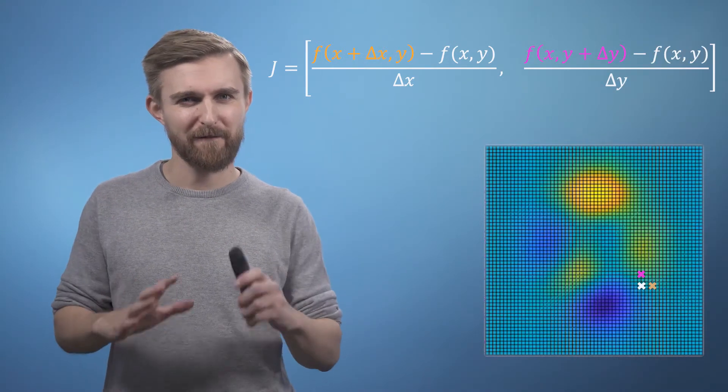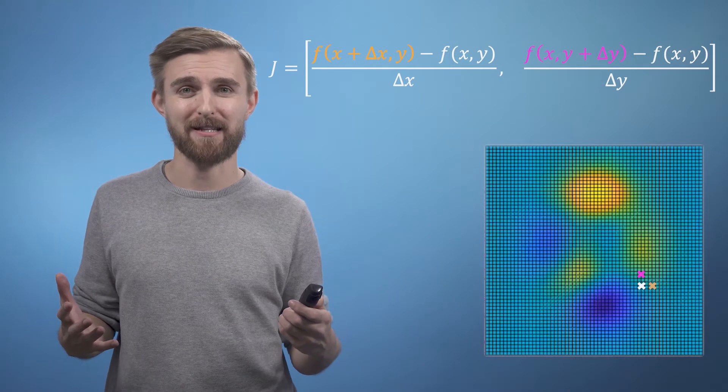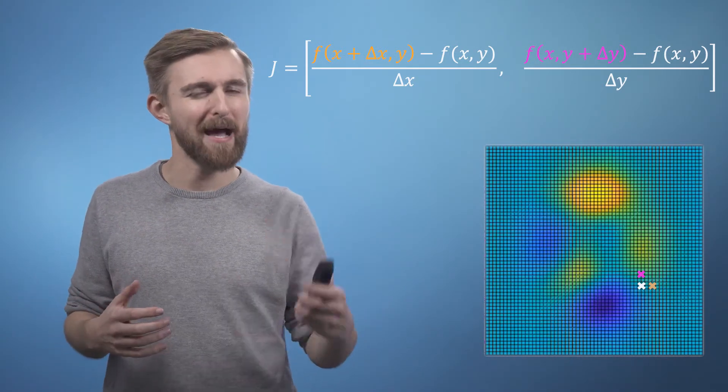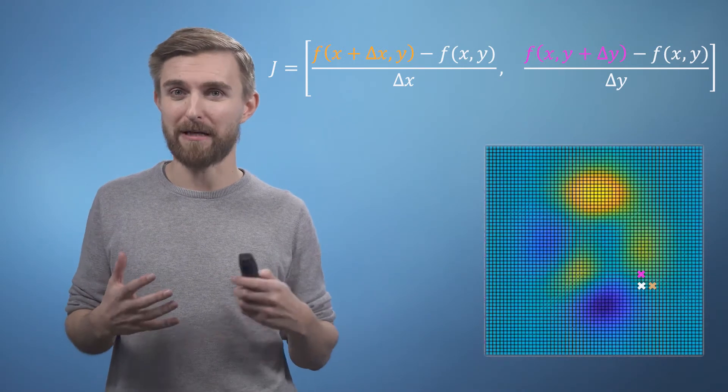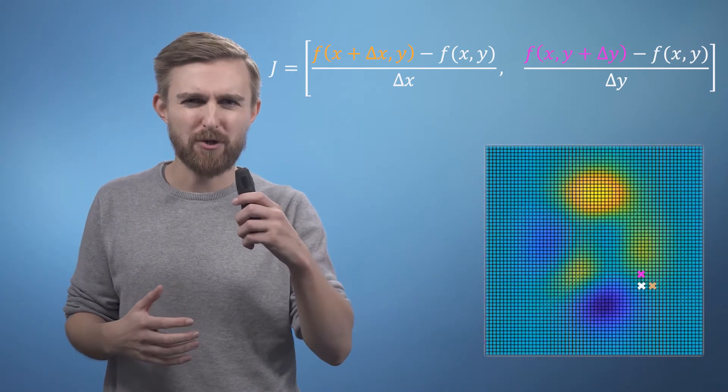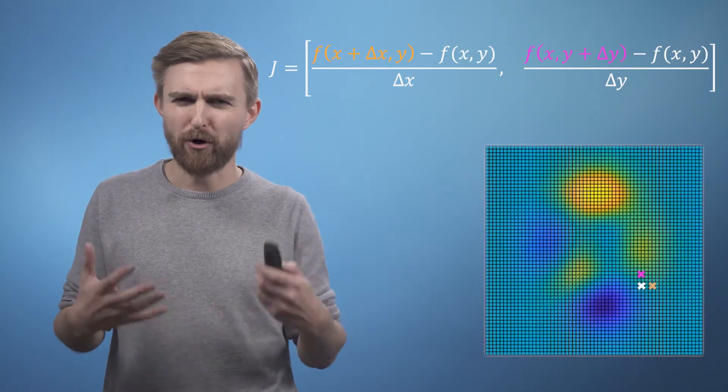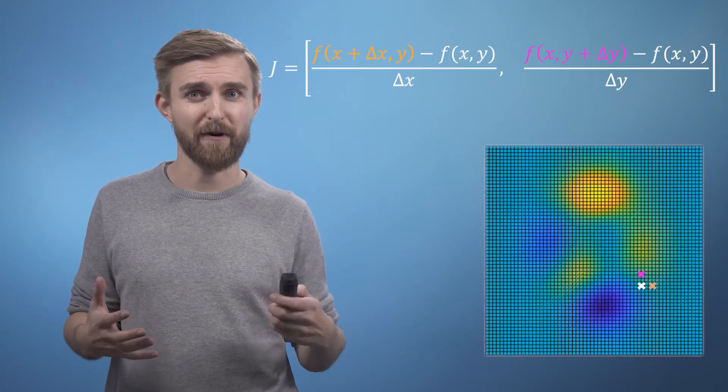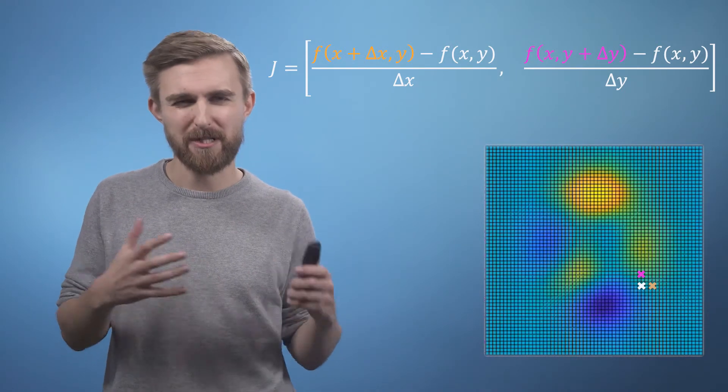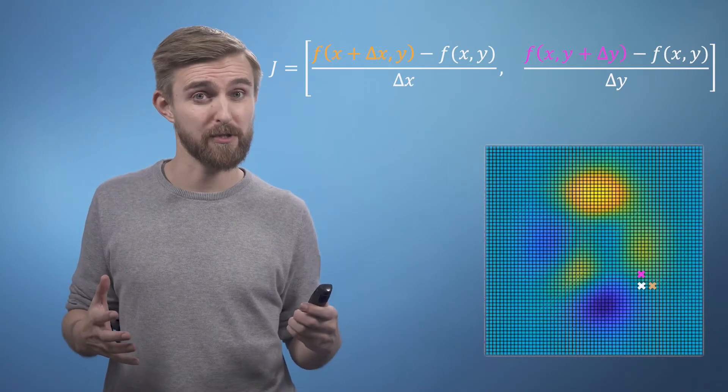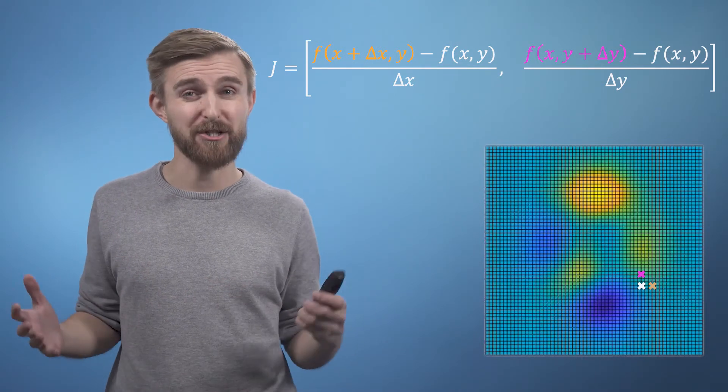Two things to bear in mind here. Firstly, how big should our little step be? Well, this has to be a balance, as if it's too big you will make a bad approximation for reasons that I hope will be obvious by this point. But if it's too small, then we might run into some numerical issues. Just remember, when your computer calculates the value of the function at a point, it only stores it to a certain number of significant figures. So if your point is too close, your computer might not register any change at all.